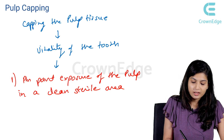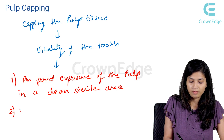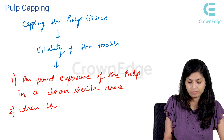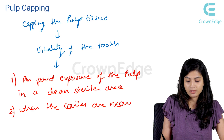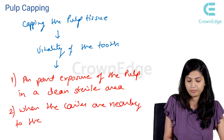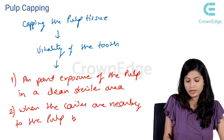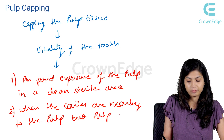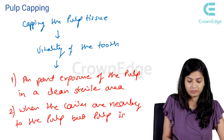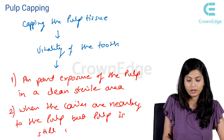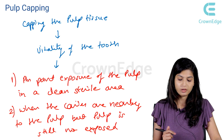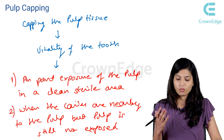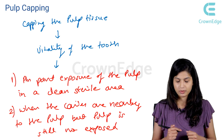The second indication is when the caries are very nearby and approaching the pulp, but the pulp is still not exposed. So the two conditions are: either a pinpoint exposure, or caries very close and approaching the pulp tissue.